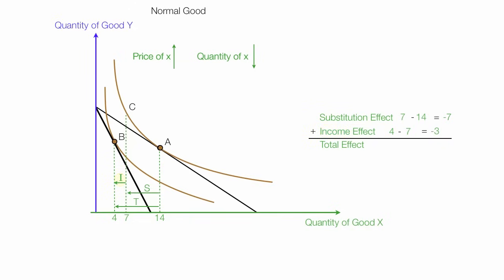The income effect is equal to negative 3. The total effect is 4 minus 14, which is equal to negative 10. Negative 7 plus a negative 3 is negative 10.